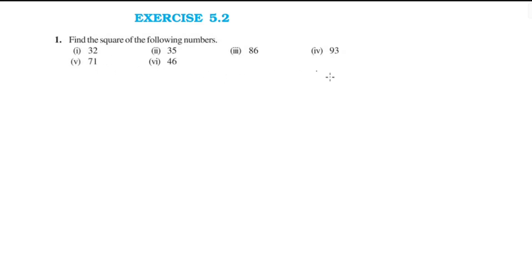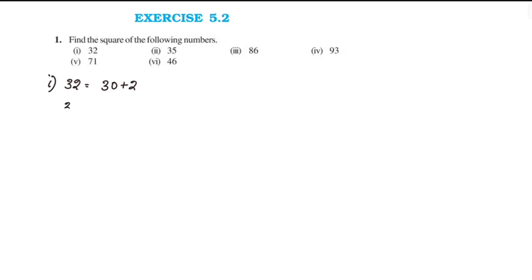We will find the square of 32. We split 32 as 30 plus 2. So 32 squared is written as (30 + 2) whole square.